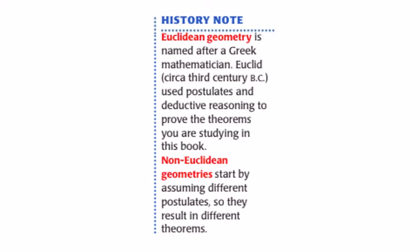On a historical note, Euclidean geometry was named after the Greek mathematician Euclid who lived about three centuries before Christ. He used postulates and deductive reasoning. That's what math is. Math is a language of reasoning to prove theorems that we study in this book. Non-Euclidean geometries start by assuming different postulates.